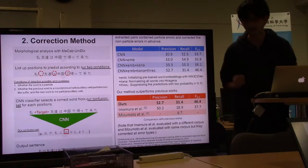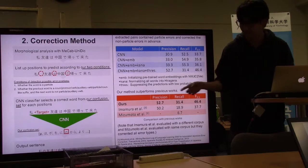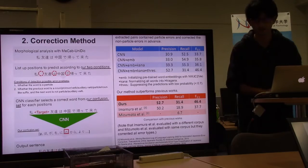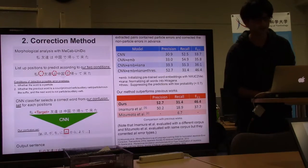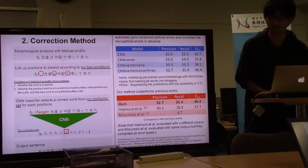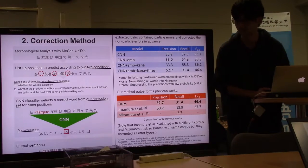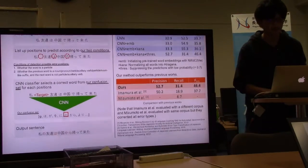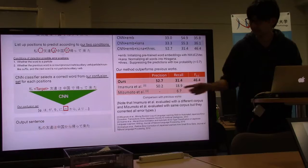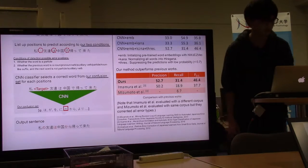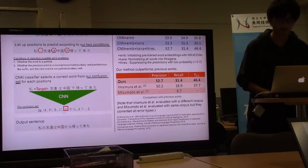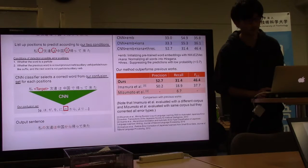If the position satisfies these conditions, the position is listed up. Third, the CNN classification model selects a correct word from our confusion set for each position.